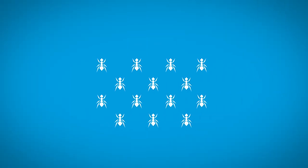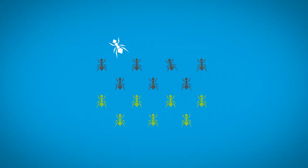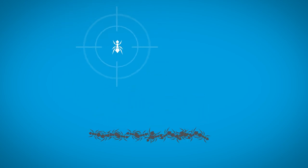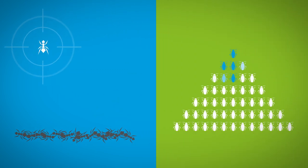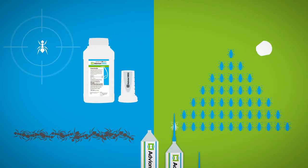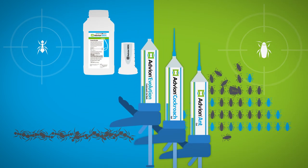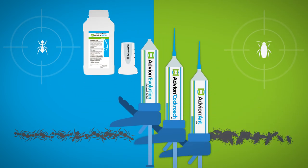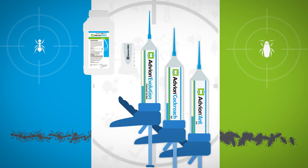The horizontal transfer resulting in secondary kill of ants and cockroaches is caused by these Advion brands for superior pest control.